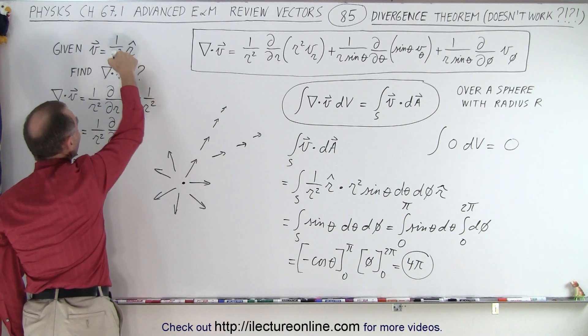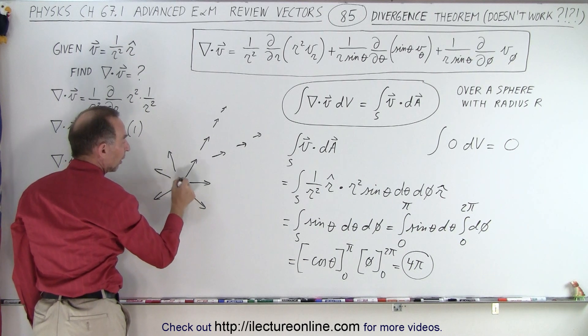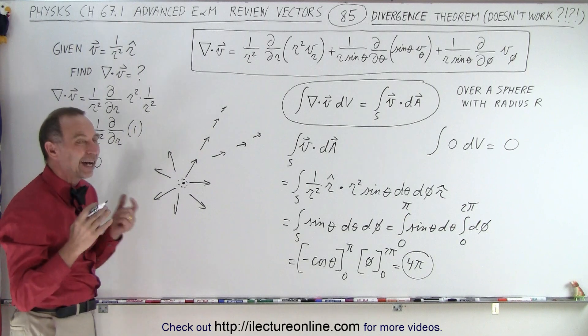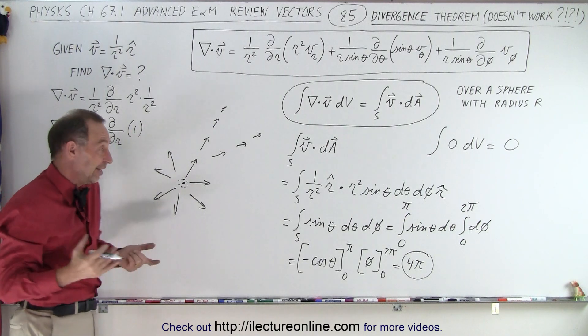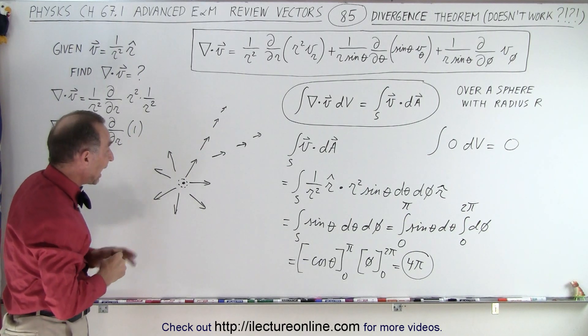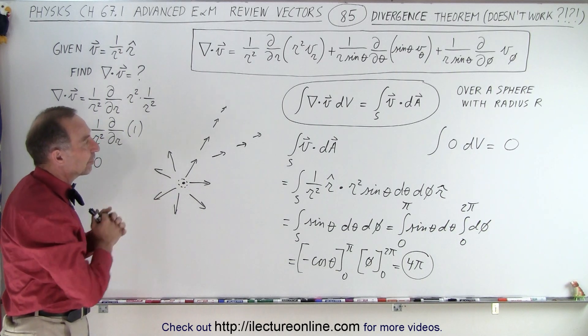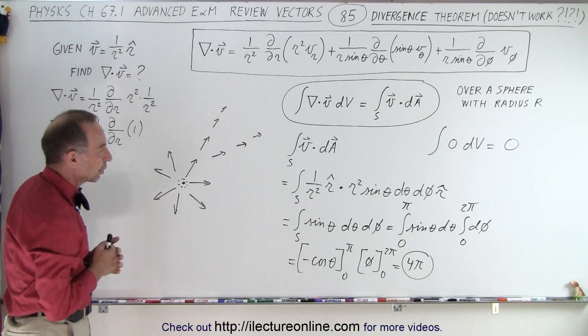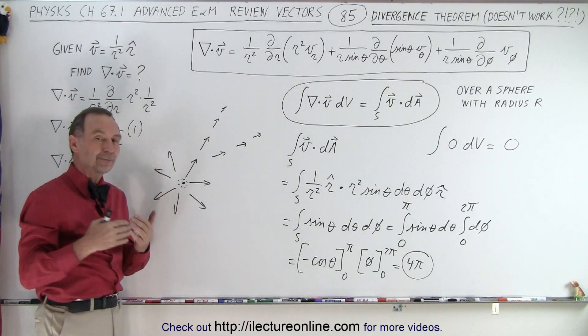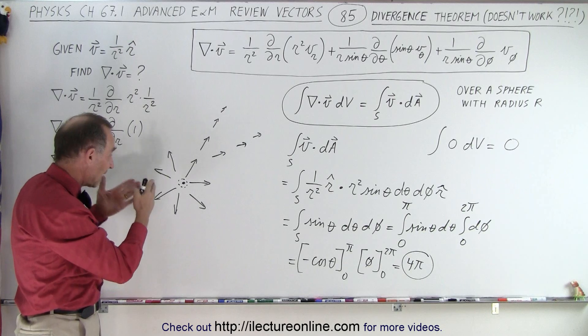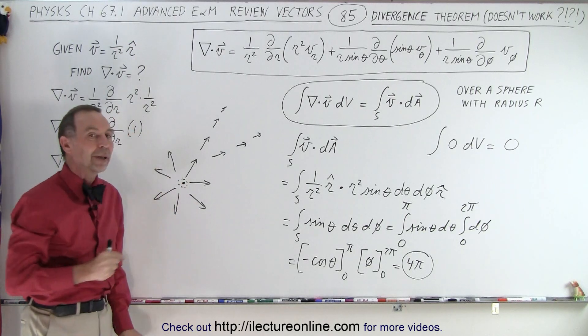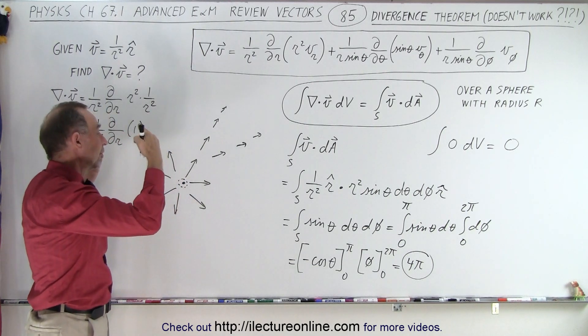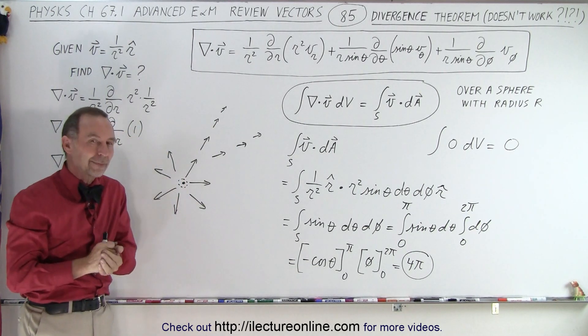But what happens when you get to the very center of that? Well, when r becomes 0, 1 over 0 becomes infinite, so the value of the function at the origin is you have an infinite magnitude. And because of that, since infinity is not defined, at that location, we can't figure out the divergence, and we can't have the divergence theorem work out.